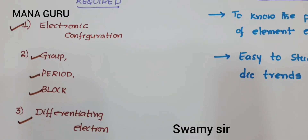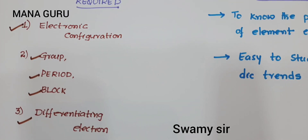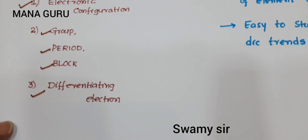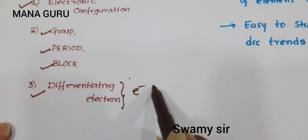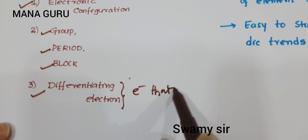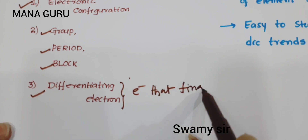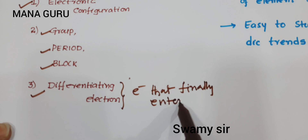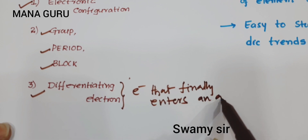What is the electronic configuration? Distribution of electrons in the ground state atom is called electronic configuration. The vertical column of the periodic table is called group, horizontal row is called period. And the electron that finally enters an atom is called differentiating electron.